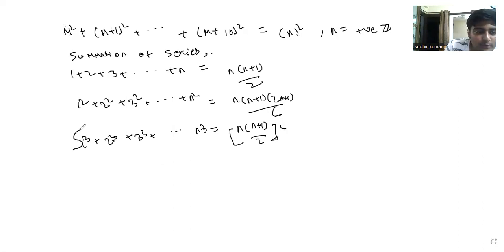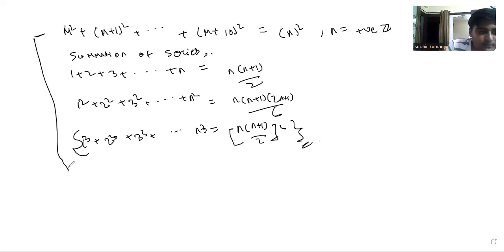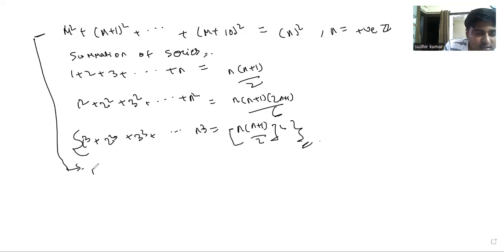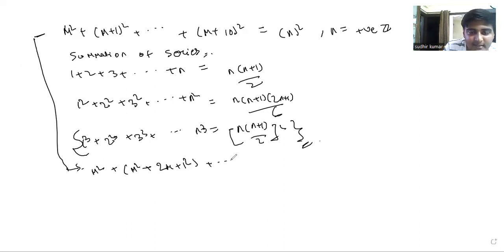The sum of cubes will not be used in this question — it is just for basic information. Now let's get back to the question. The expression m² + (m+1)² + ... can be written as m² + (m²+2m+1) + ... up through (m²+2·10·m+10²).